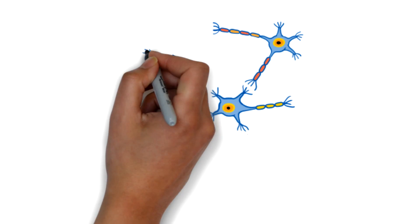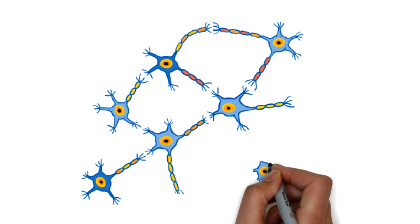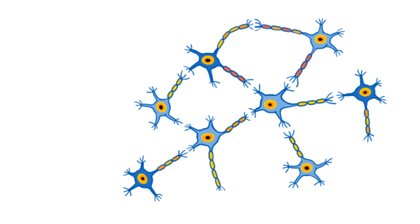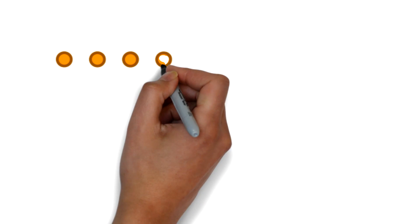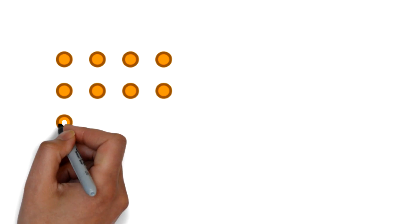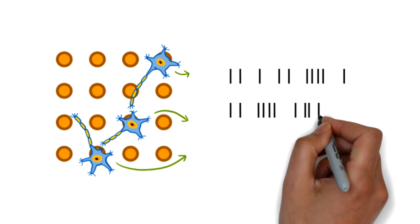In the dish, Glutoneurons connect with each other to form a spontaneously active neural network. This spontaneous activity can be measured on a multi-electrode array, or MEA, where each electrode detects the activity of the overlying neurons and displays it in a raster plot in real time.